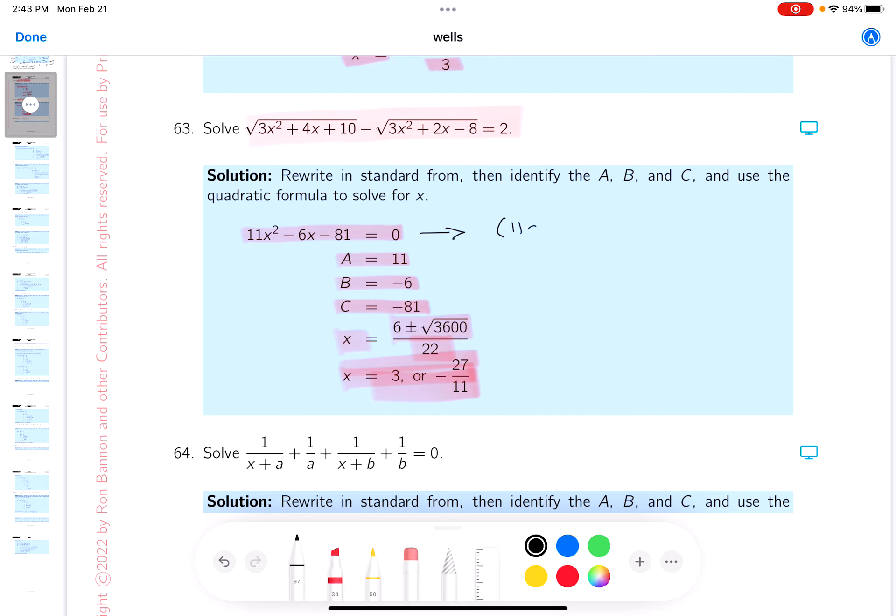11x squared - the only way I could write that down is 11x and x. 81 is a little more interesting, and I'm going to say 27 and 3.